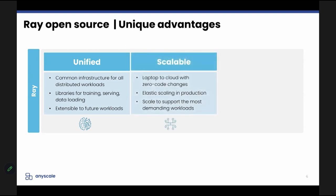Another reason people choose Ray and AnyScale is the scalability — this is really our bread and butter, the whole point of Ray. Making it easy to go from your laptop to running on thousands of GPUs, making it easy to scale development workloads and run them in production, making it easy to scale training, data ingest, pre-processing, and so on. Scalability and performance are critical for doing machine learning, and that is something Ray provides out of the box.